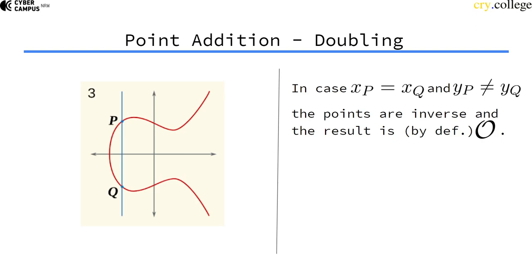Well, if p and q have the same x value, but a different y value, the points are actually inverse to each other. So by definition the result would be the point at infinity, which is our neutral element.